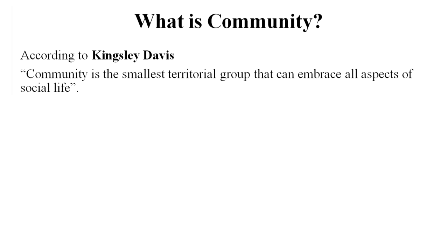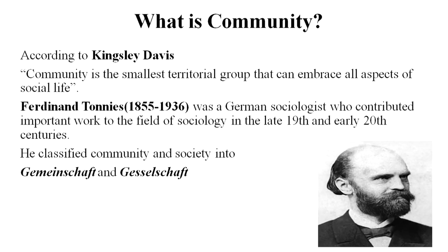Now let us understand what is a community. A community generally means a small territorial group which has all aspects of social life, with a well-defined boundary where different aspects of social life are included. Ferdinand Tönnies, a German sociologist who contributed immensely to sociology in the 19th and 20th centuries, classified community and society into two types: the Gemeinschaft and the Gesellschaft.